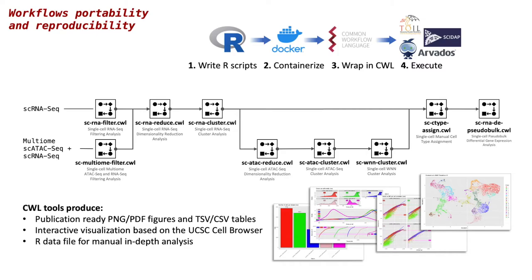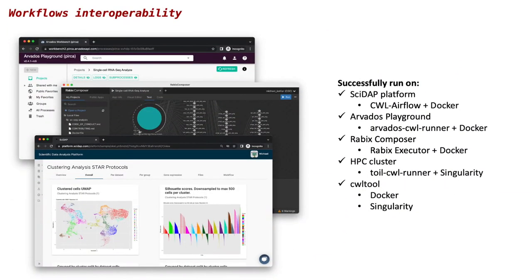The workflows and tools produce publication-ready plots, tab-delimited tables, interactive visualization based on the UCSC cell browser, and R data files for in-depth analysis if needed. To assess reproducibility and interoperability of our tools, we combined them into a single cell RNA-seq pipeline and ran it in several workflow execution environments that support CWL specification. All runs finished successfully and produced identical results in a reasonable time.